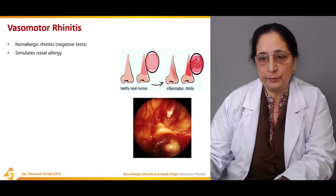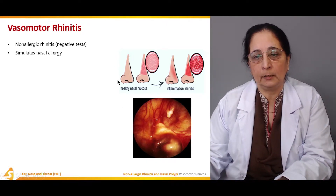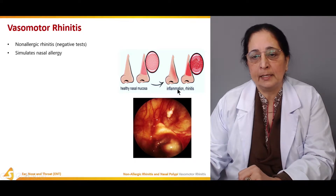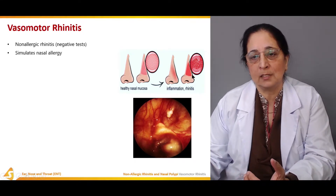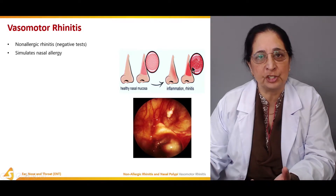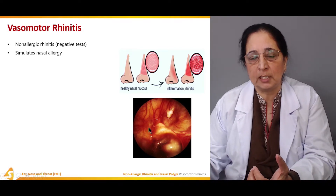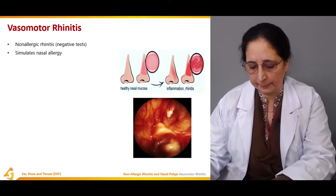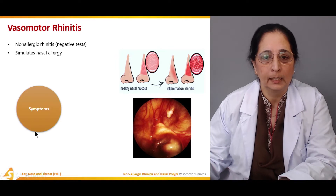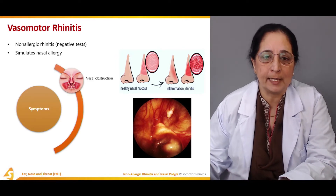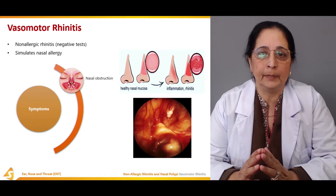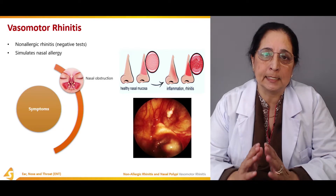This is the normal healthy nasal mucosa — it has a pinkish color. When rhinitis occurs, it causes redness, congestion, and stuffiness. All these changes occur associated with rhinitis or inflammation.